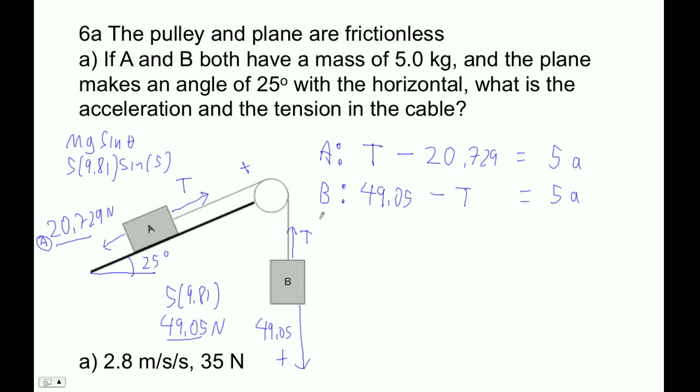So now we are set. Now we can just add these guys together, as we always do. And we end up with 49.05 minus 20.729 equals 10 times A. And now we can solve for A.